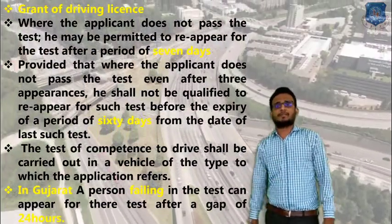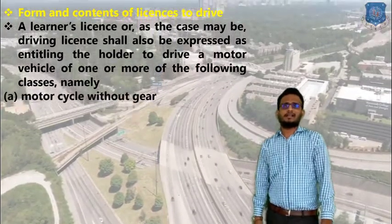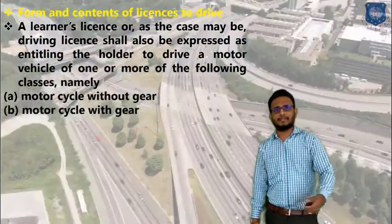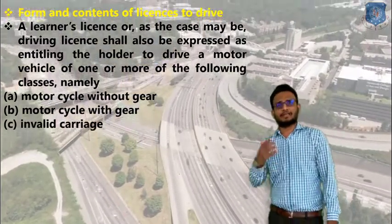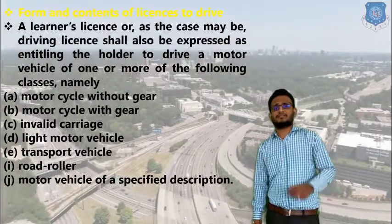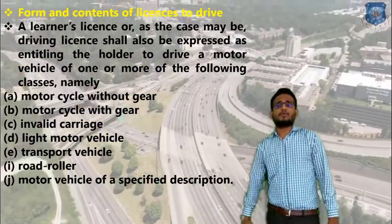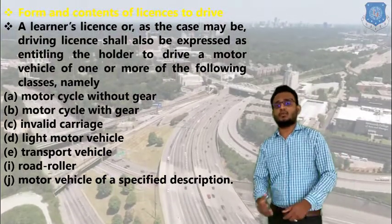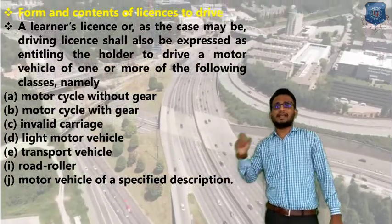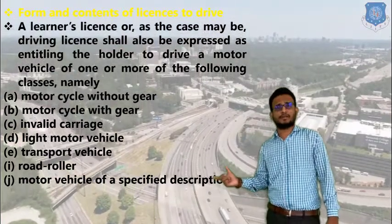Now, forms and contents of driving licenses. The Motor Vehicle Authority provides the following categories: first, motorcycle without gear; second, motorcycle with gear; third, invalid carriage for physically handicapped persons; fourth, light motor vehicle; fifth, transport vehicle; sixth, road roller; and seventh, motor vehicle of a specific discretion with special provisions for government authorities.